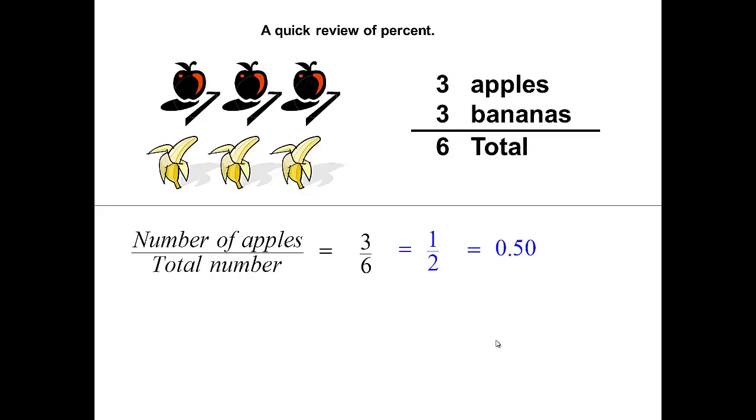Now we want to change that decimal to a percent by moving our decimal two places to the right. The decimal is between the first zero and the five. We move it two places to the right and that will give us fifty percent.